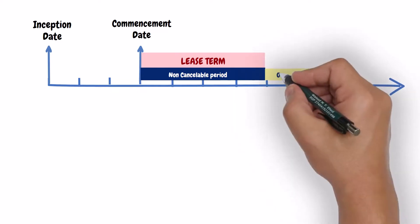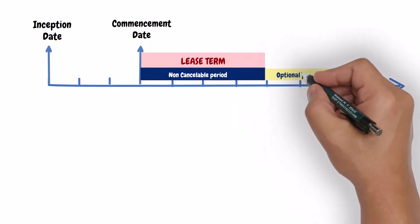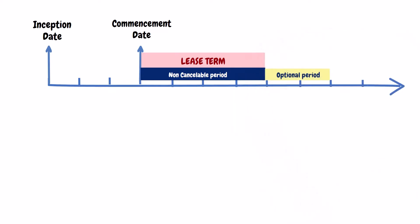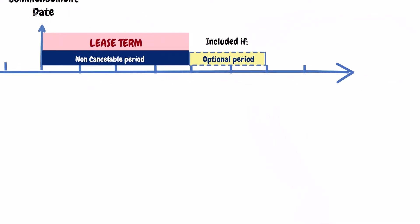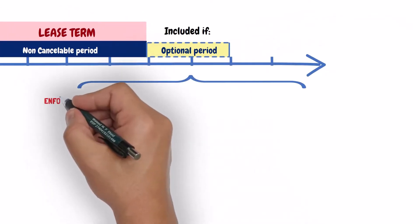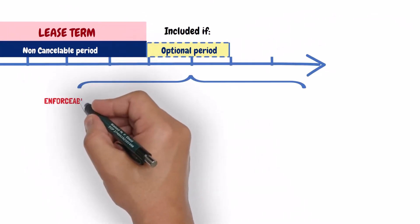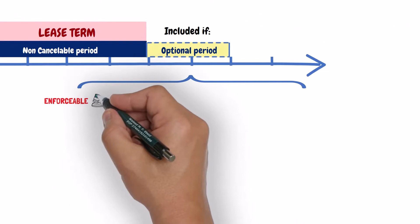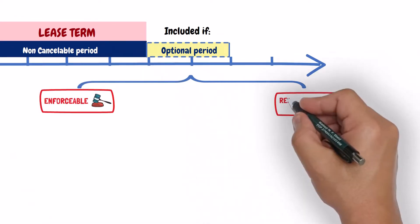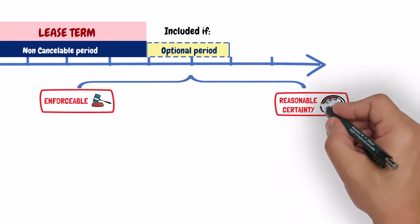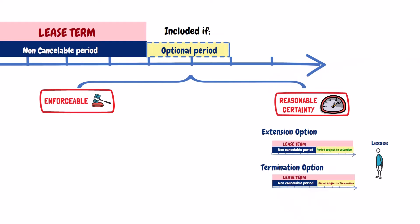As we said before, to include a period covered by an option in the lease term, two conditions should be met. First, the lease should be enforceable during that period. And second, there must be a reasonable certainty that the lessee will exercise the lease extension option, or not exercise the lease termination option.